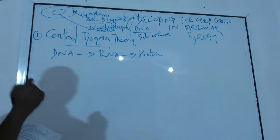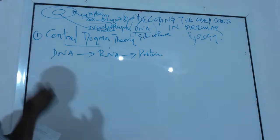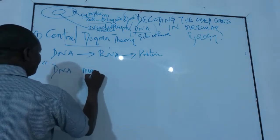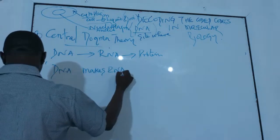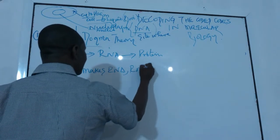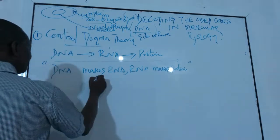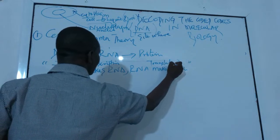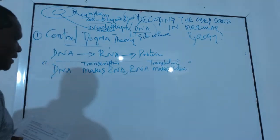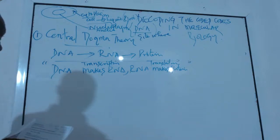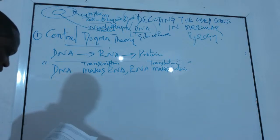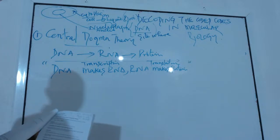Now as a molecular biologist, one thing that is very important to learn by heart is the central dogma theory. If you want to remember the central dogma theory, just remember this mnemonic: DNA makes RNA, and RNA makes protein. From DNA to RNA is transcription, and from RNA to protein is translation.